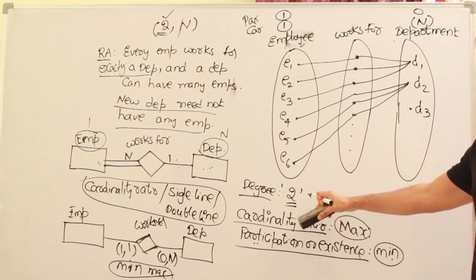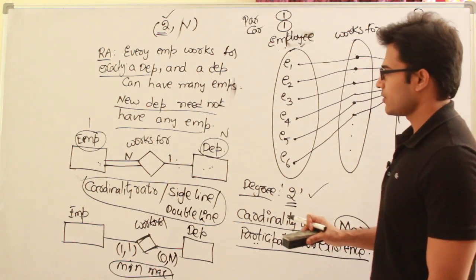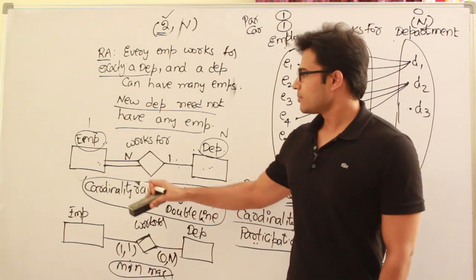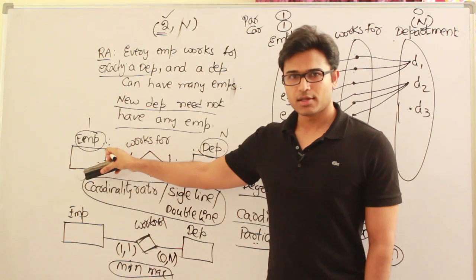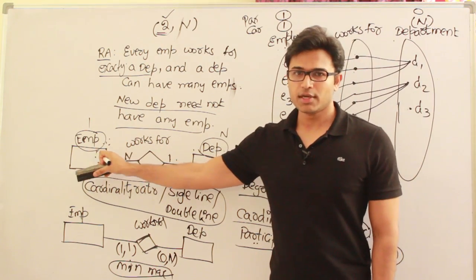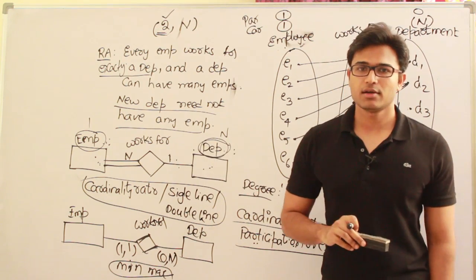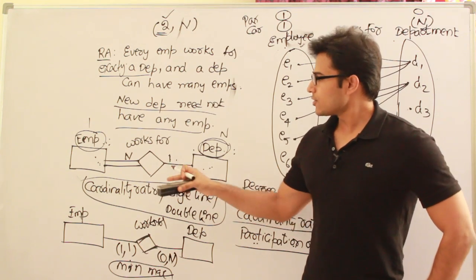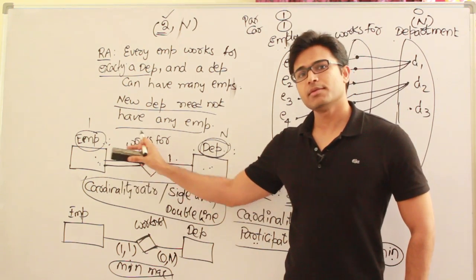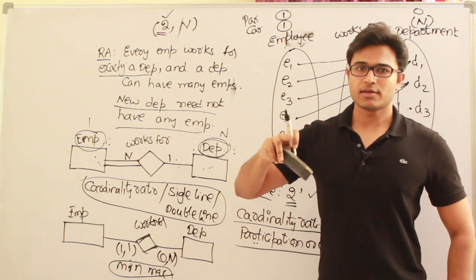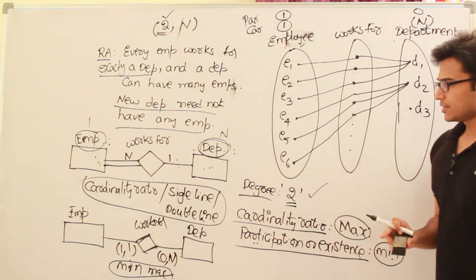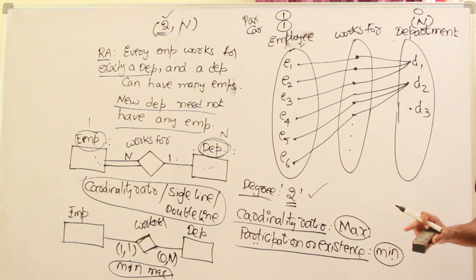Along with the entity type, we can also give a role name. In every relationship, every entity plays a role — for example, the employee entity plays the role of 'employee' and the department entity plays the role of 'employer'. Role names are not very useful for simple binary relationships like this, but they become important in recursive relationships, where a relationship is defined on the same entity set twice and that set acts in two different roles. We will take an example and discuss that further.